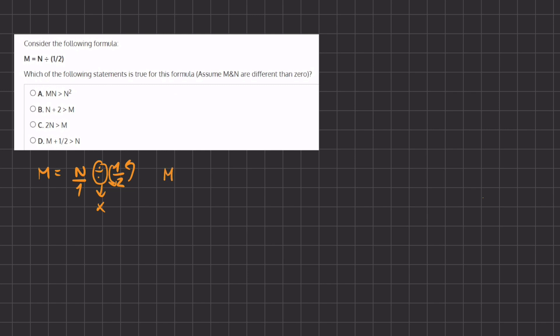So we have M equals N divided by 1, our first term stays the same, our division sign turns into a multiplication sign, and our second term turns into a reciprocal of 2 over 1. Now if we further simplify this, we have M equals 2N, because N times 2 gives us 2N.